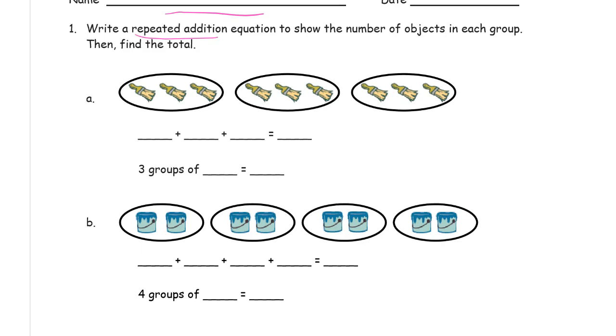So just looking at the picture, we've got three things here. Three things here. Three brushes here. Three plus three plus three. You can count them all. Nine. Three groups of three in each group equals nine.